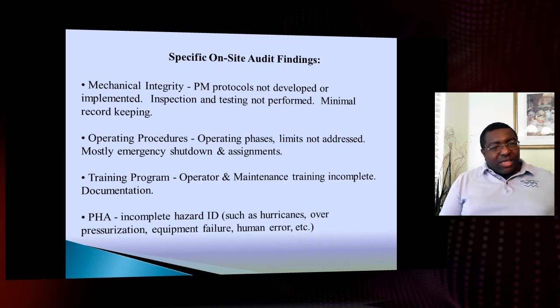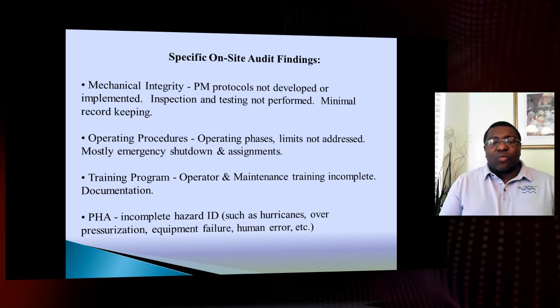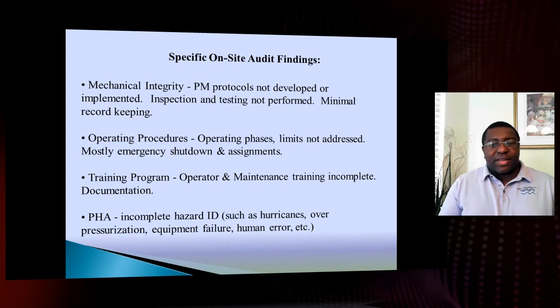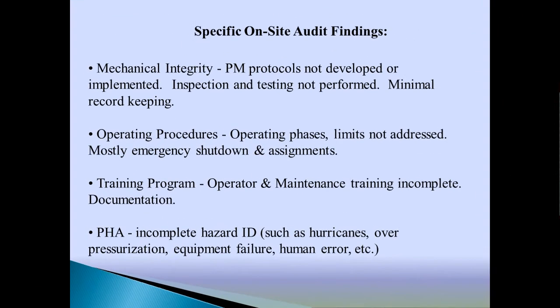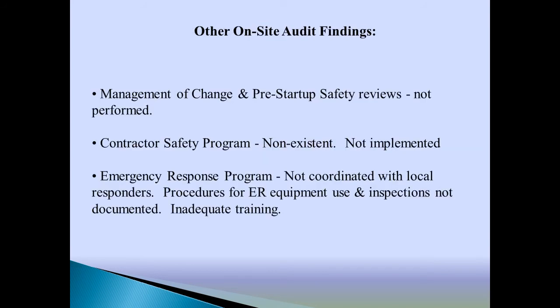Operating procedures should show details on exactly how you start up and shut down a process — that detailed information puts a regulator at ease. Training and documentation of your training are also reviewed. Your process hazard analysis or job hazard analysis must include a portion for rain events, hurricane events, earthquake events, or whatever natural hazard is relevant to your part of the US or globally. Make sure to add that to your plan.